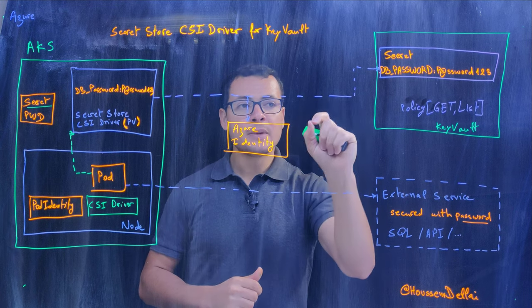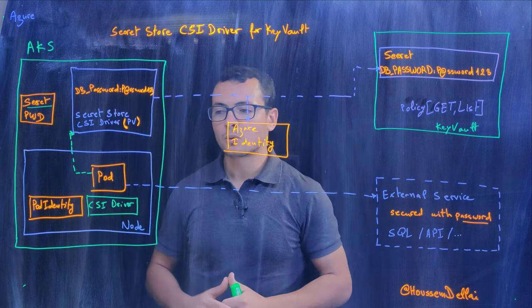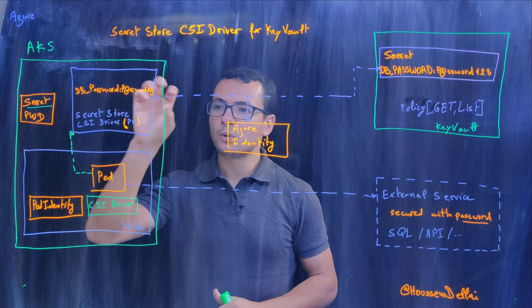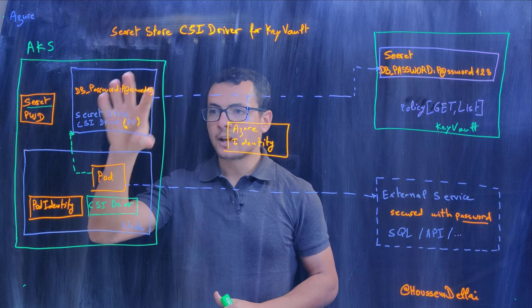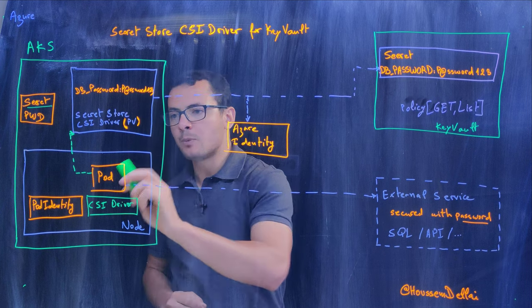But then, how can I make that password available for my pod? Here, we'll be using the CSI driver for Key Vault. This will mount a volume into my cluster, and that volume will expose this password for my pod.